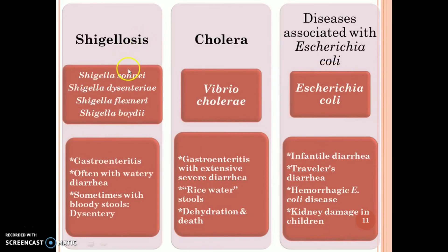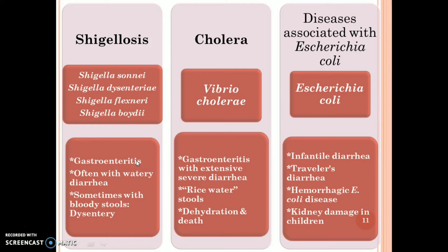Shigellosis is caused by Shigella sonnei, Shigella dysenteriae, Shigella flexneri, and Shigella boydii. The symptoms are gastroenteritis, often with watery diarrhea, sometimes with bloody stools, and dysentery.